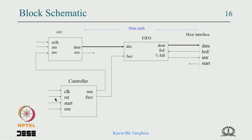The controller needs a clock and reset; the start signal comes from the host. When the host says start, the whole operation starts. The start of conversion is given by the controller. The FIFO write signal is given by the controller because the controller knows when the end of conversion is coming. The end of conversion comes to the controller, then it gives the FIFO write signal, the data is connected to the data input, the output data goes to the host interface, the host read is connected to the FIFO read, and three-quarter-full goes to the interrupt.